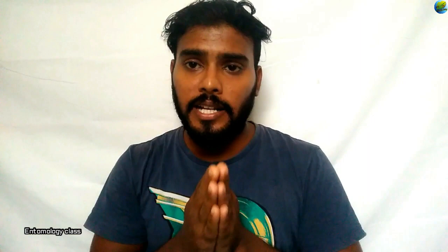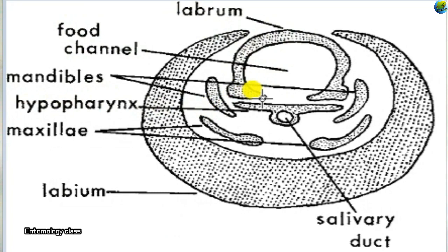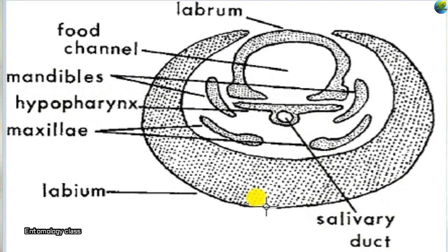In the hemipteroid type, the maxillae with double grooves form the food canal and the salivary canal. In the dipterous type, the modification is done in the epipharynx and hypopharynx. The epipharynx tube is modified into the food canal through which blood is sucked, and the hypopharynx is turned into the salivary canal — since the salivary glands open below the hypopharynx. Through this salivary canal the mosquito injects toxic enzymes into the host.